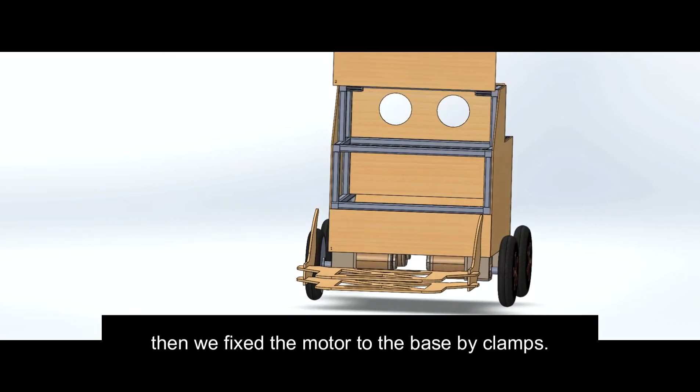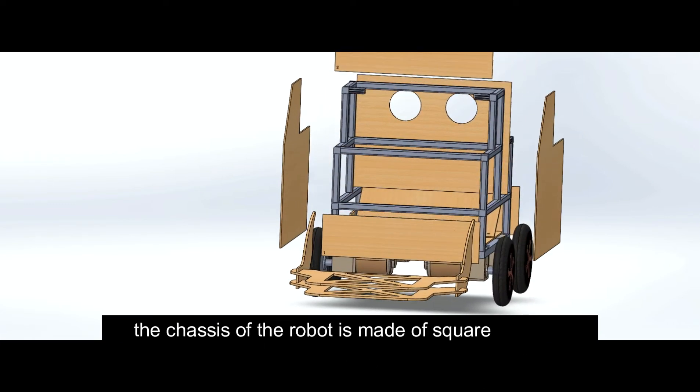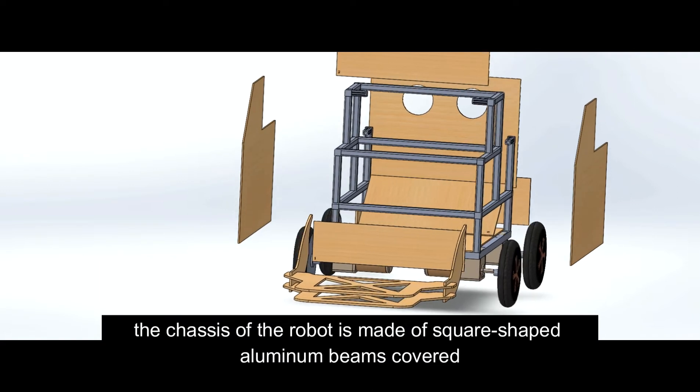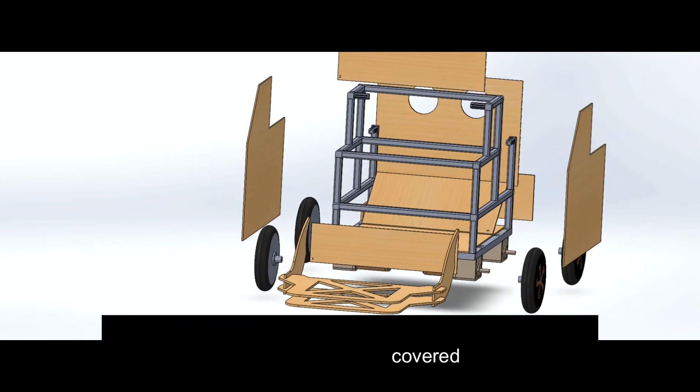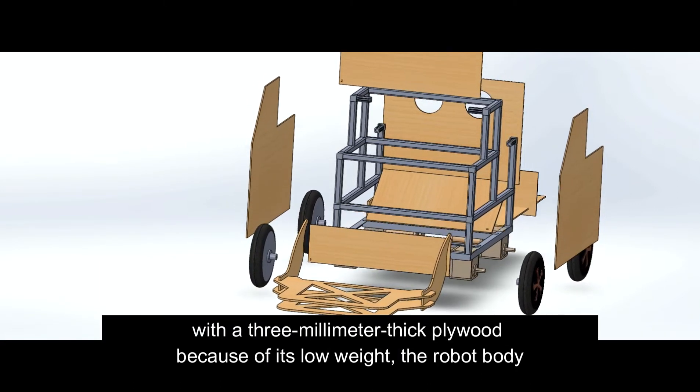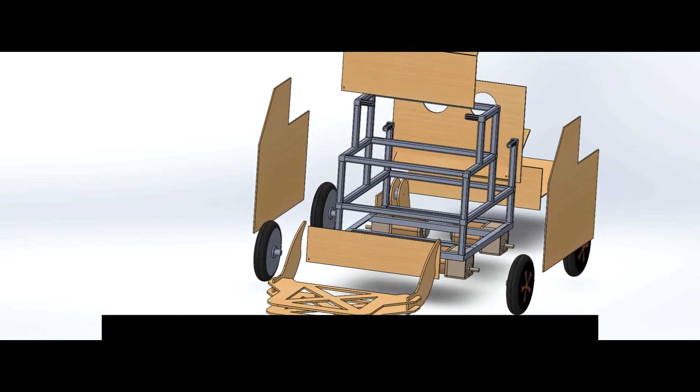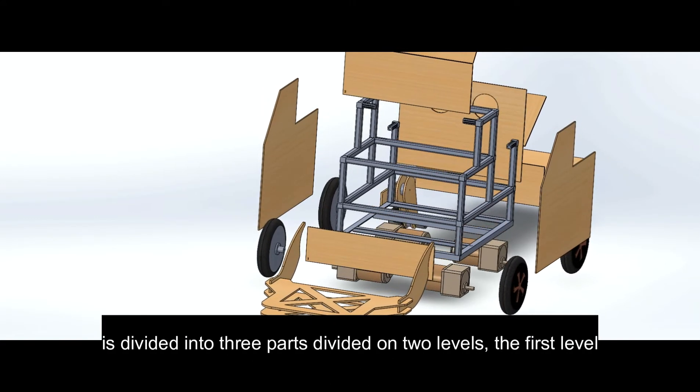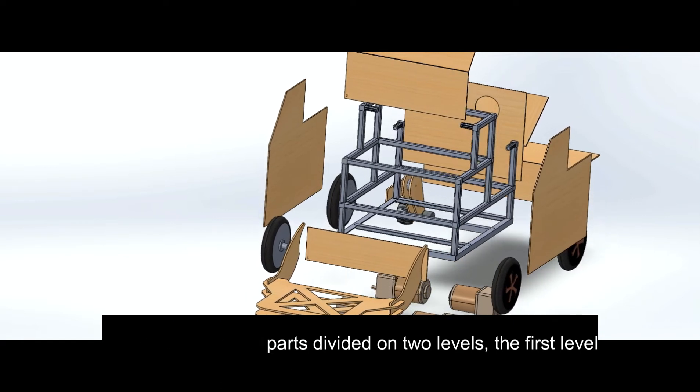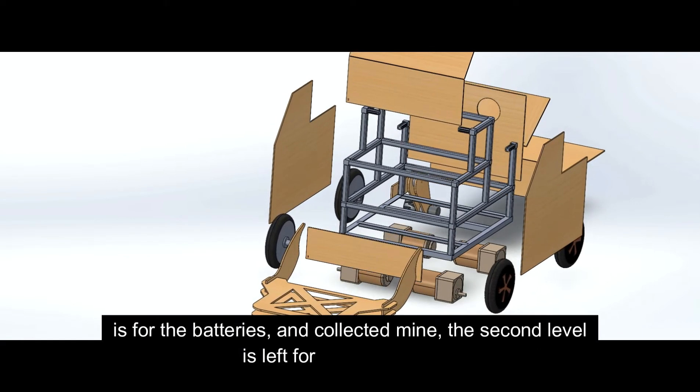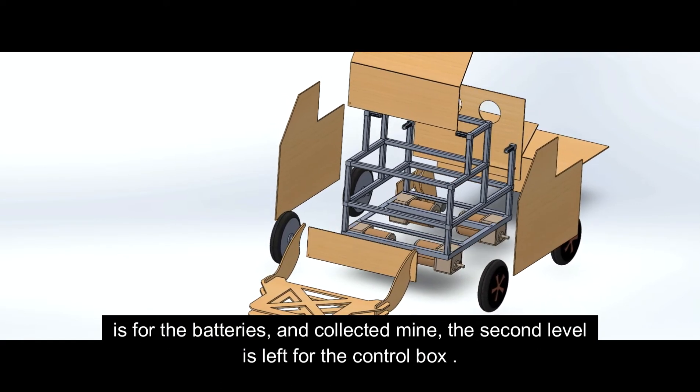Then we fixed the motors to the base by clamps. The chassis of the robot is made of square-shaped aluminum beams covered with 3mm thick plywood because of its low weight. The robot body is divided into three parts on two levels. The first level is for batteries and collected mines, and the second level is for the control box.